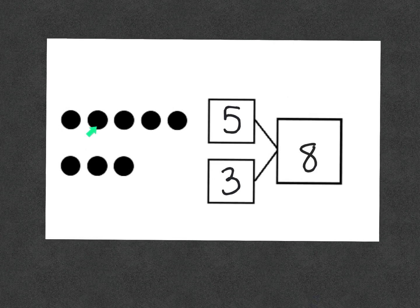One, two, three, four, five, six, seven, eight. So one group of five plus one group of three equals a total of eight circles.